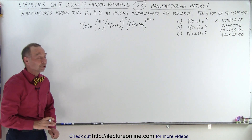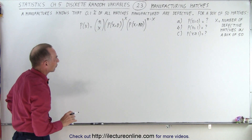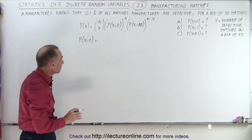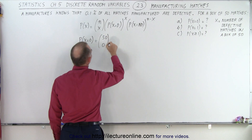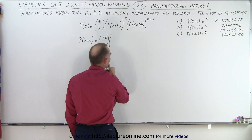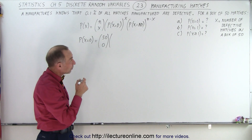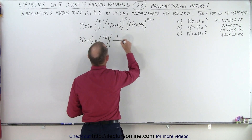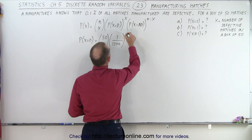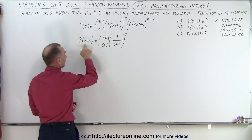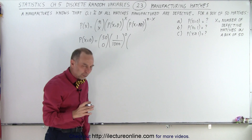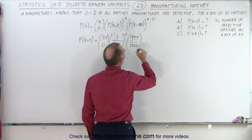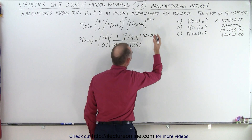For x equals zero, the probability that x equals zero means no defective matches in the box of 50. So we have 50-choose-0 times the probability that x is defective — which is 0.1%, or one in a thousand — raised to the zero power, times the probability that x is not defective, which is 999 out of a thousand, raised to the 50 minus 0, or 50th, power.